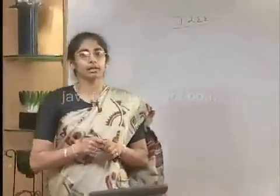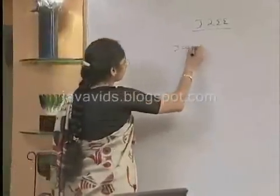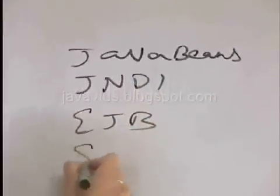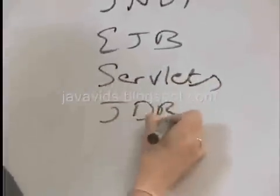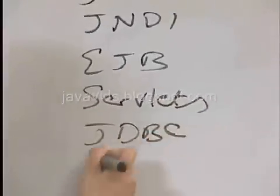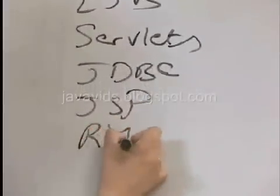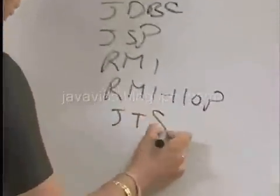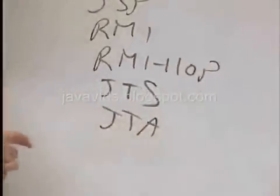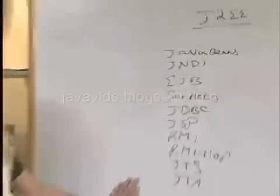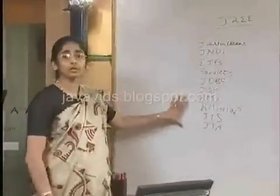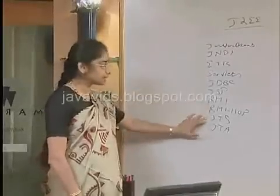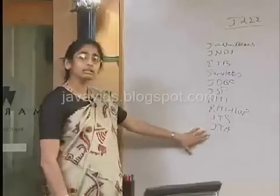J2EE consists of the following components: Java Beans, JNDI, EJB, servlets, JDBC, JSP, RMI, RMI-IIOP, JTS, JTA, and the list goes on. These are just a few of the components available in J2EE. JNDI stands for Java Naming and Directory Interface, JTS stands for Java Transaction Service, and JTA stands for Java Transaction API.